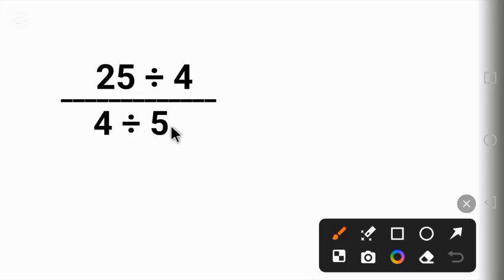To solve this question correctly, we will find the value of 25 divided by 4, and then the value of the denominator, 4 divided by 5, and then divide both answers.